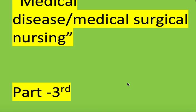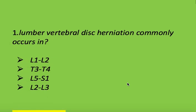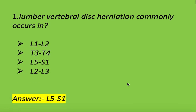These are multiple choice questions and answers. First question: lumbar vertebral disc herniation commonly occurs in which vertebra? Options: L1 to L2, T3 to T4, L5 to S1, or L2 to L3. Right answer is L5 to S1 vertebra. Lumbar vertebral disc herniation commonly occurs in L5 to S1 vertebra.